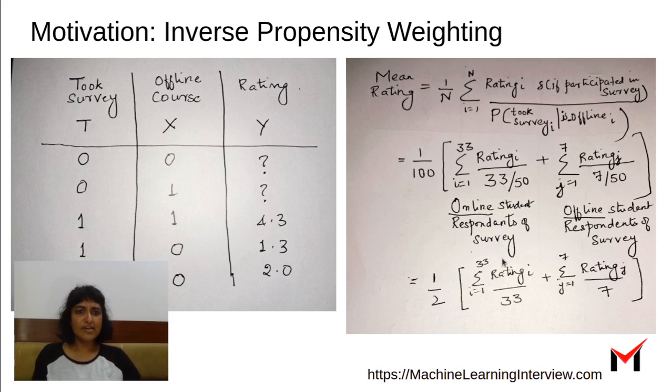And now if we simplify this, it just turns out to be taking the ratio of ratings for all the online students, all the 33 online ratings, plus the ratio of all the seven students who took offline rating and then taking an average of both these. So that's what the solution turns out to be in this case. So what we are saying is we avoid the offline students being underrepresented by taking these two separate averages and then averaging them. And this makes sense from a common sense perspective to avoid the effect of selection bias here.